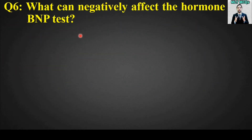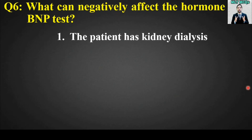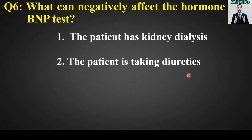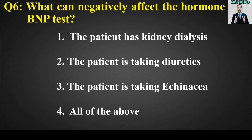MCQ number six: What can negatively affect the hormone BNP test? Options are: the patient has kidney dialysis; the patient is taking diuretics; the patient is taking echinacea; all of the above. The right answer is option number four — all of the above.